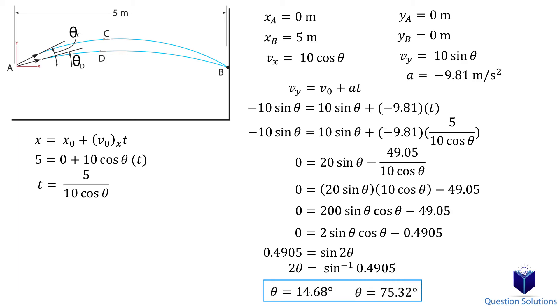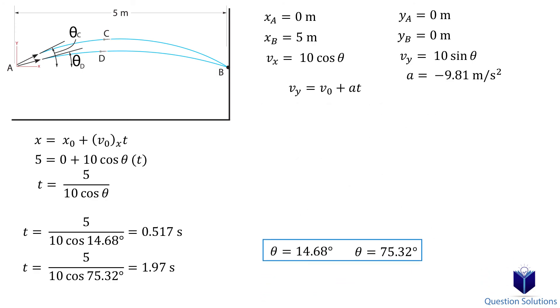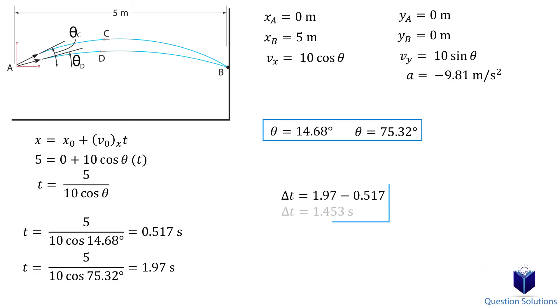Now, we need to find the two time values. Let's substitute our theta values into our first equation. The time between each throw can be calculated by subtracting one from the other.